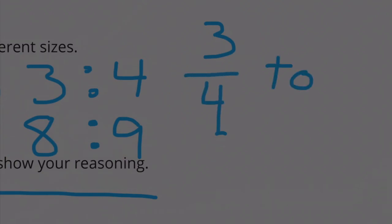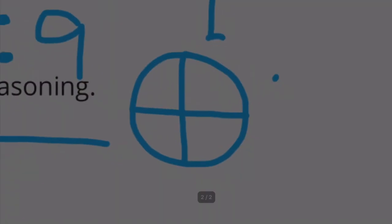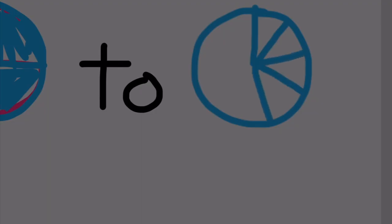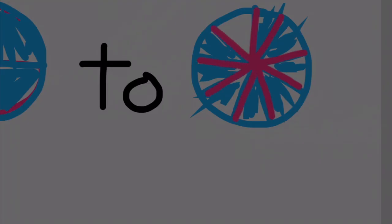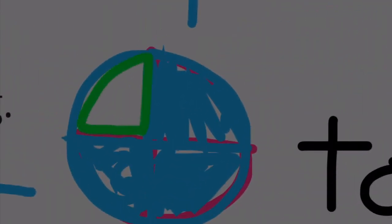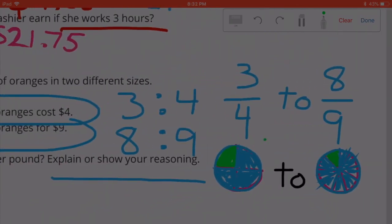So we're comparing 3 fourths to 8 ninths. We can show what it looks like this way. This represents 1 fourth, 2 fourths, and 3 fourths. And we can compare that with 1 ninth, 2 ninths, 3 ninths, 4 ninths, 5 ninths, 6 ninths, 7 ninths, 8 ninths, and 9 ninths. 8 ninths leaves a smaller amount left over than 3 fourths. Therefore, 8 ninths is larger.